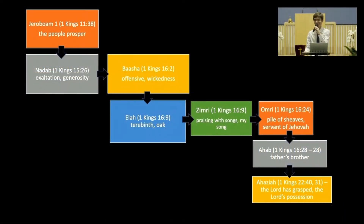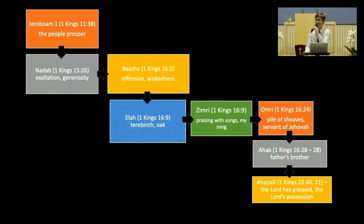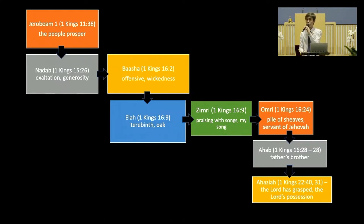After Ahab, we know he had two sons. The first is Ahaziah, and the other one is Joram. Ahaziah is the elder son. We need to take note that Ahaziah had no son to take over the throne when he died, so his younger brother Joram will take over later on, which I will share next week.